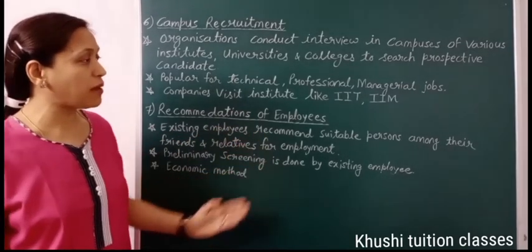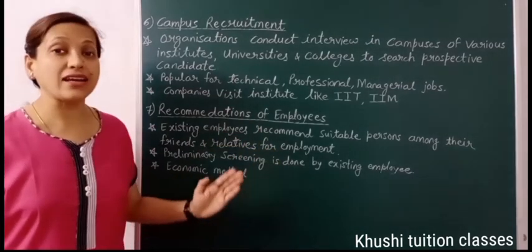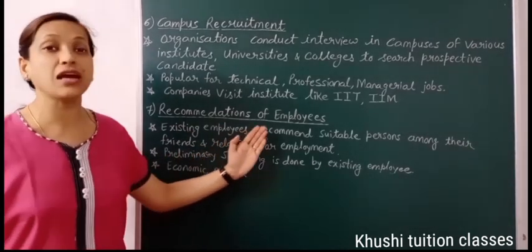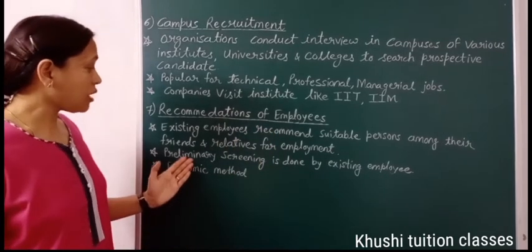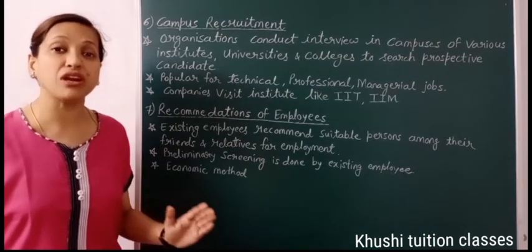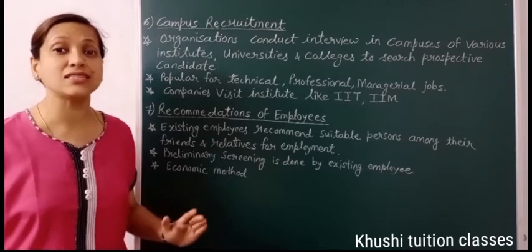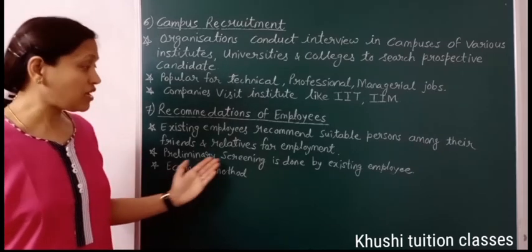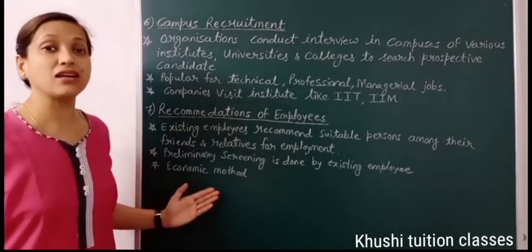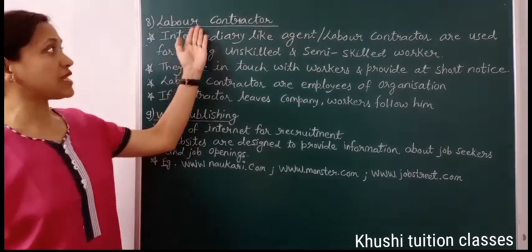The seventh method is recommendation of employees — existing employees recommend suitable persons from among their friends and relatives to the employer for vacancies. The existing employee already knows the company's general information, plans and policies, and what type of person is suitable for each post, so preliminary screening is done by the existing employee. This method is very economical because there is no advertisement cost.